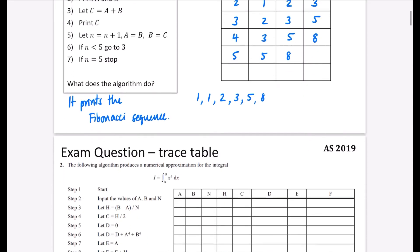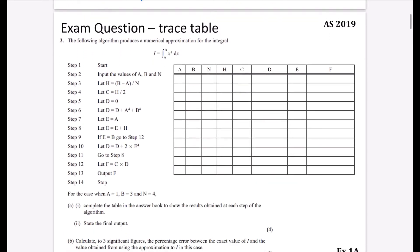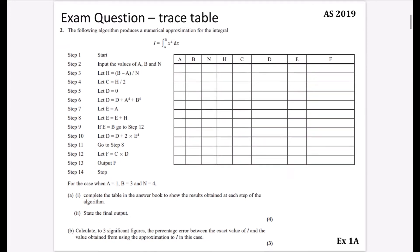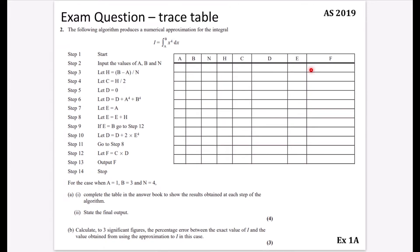Let's look at an exam question using a trace table. It's only from the AS paper—I haven't seen it in an A-level paper. They're pretty broad about how they give marks; they don't need step-by-step detail. You just use the table to help you do the calculations. This algorithm produces a numerical approximation for integration. If you haven't done integration yet, skip this part and go straight to exercise 1A. They've got the algorithm here with some input values. We'll do the algorithm for these values, fill in the table, and state the final output.